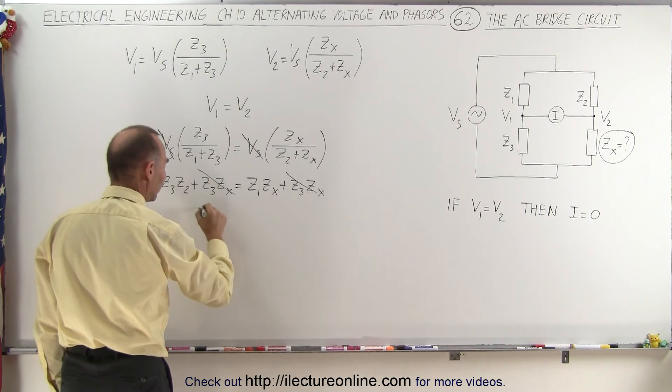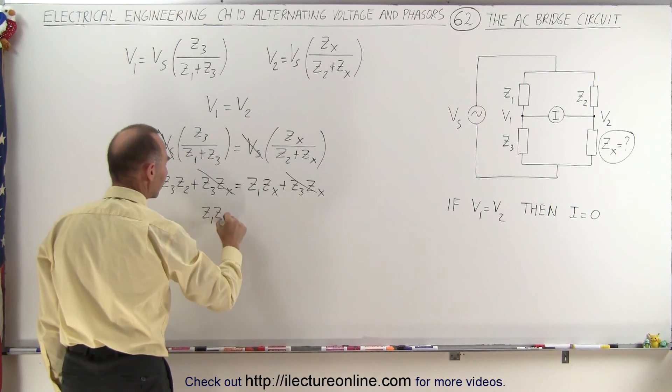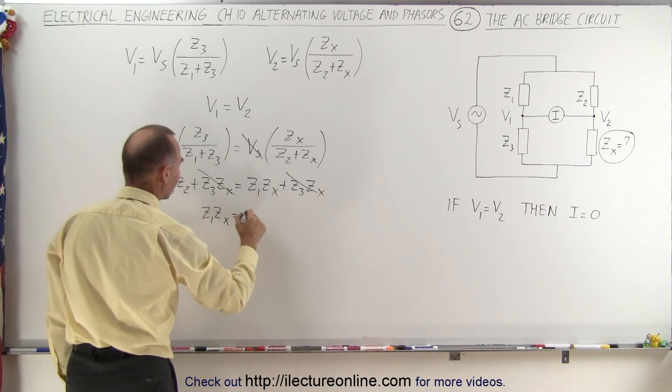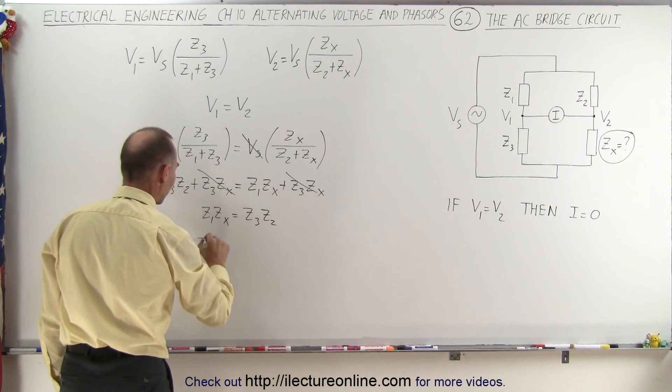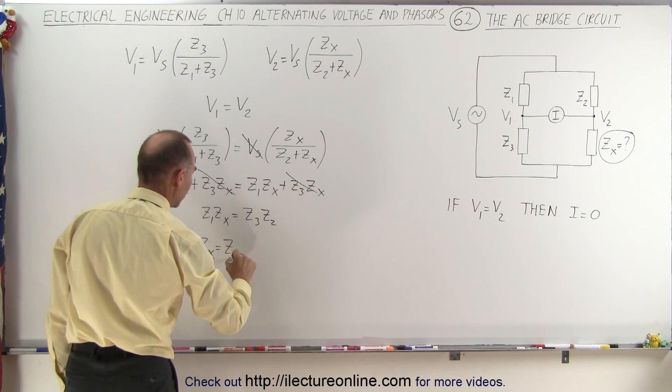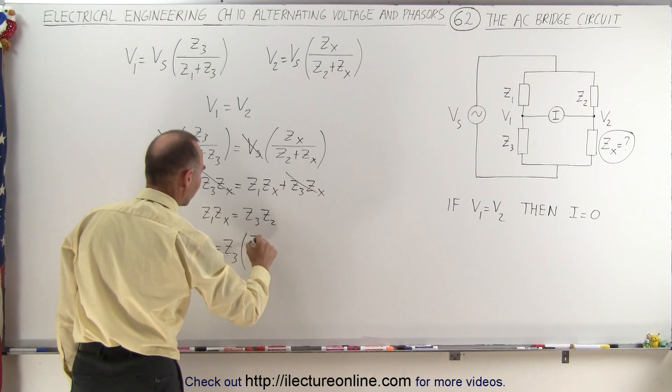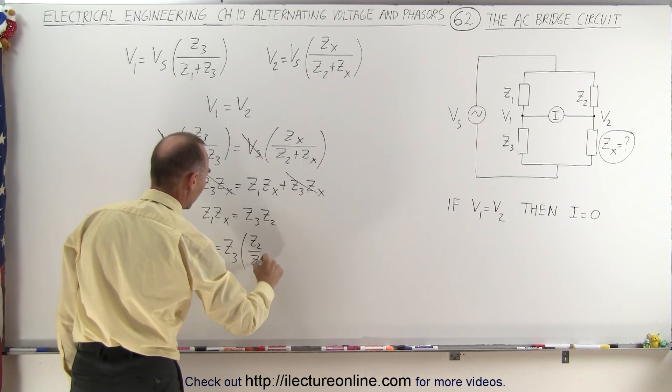Moving Z1 times Zx to the left side and Z3 times Z2 to the right side, we can finally write that Zx equals Z3 times the ratio of Z2 over Z1.